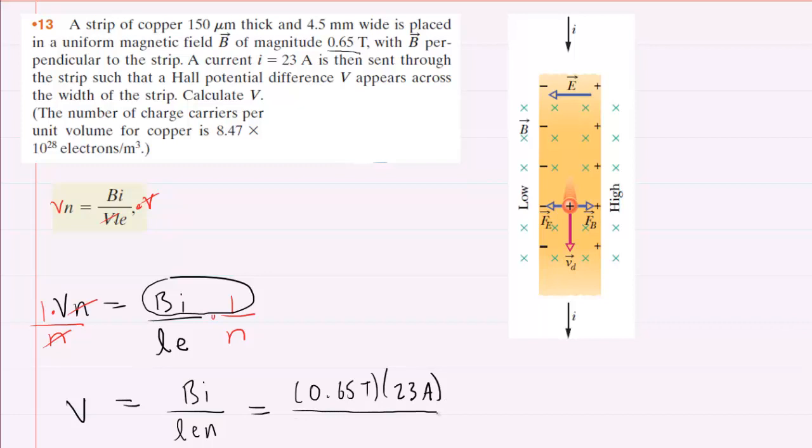We'll divide this by L. Be careful here - L is the thickness of the strip. Very specifically, it's the thickness of the strip. And this thickness is given to us, but it's given in micrometers. You can see the little Greek letter mu there. So to convert that into meters, we're going to take the 150 and multiply it by 10 to the negative 6th. That will change the micrometers into simply meters.